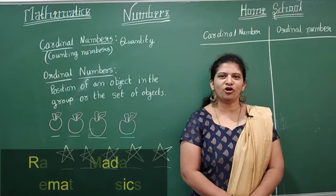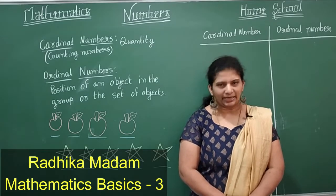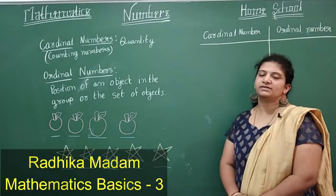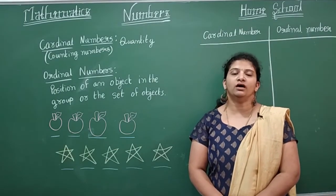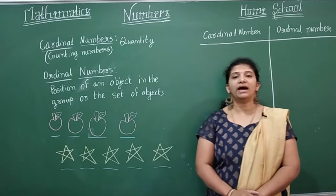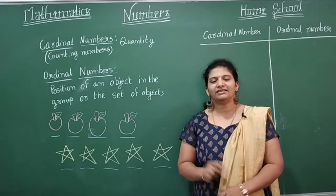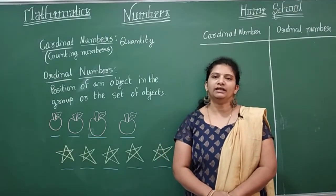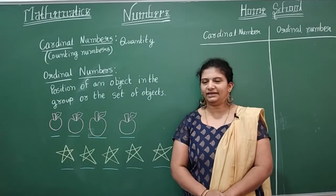Hi children, welcome to your home school. Today we are going to learn about cardinal and ordinal numbers. What is a cardinal number? Cardinal number is also called as counting numbers, or numbers which show the quantity. So when we count numbers — 1, 2, 3, 4, 5, 6, 7, 8, 9, 10 — those numbers are all called cardinal numbers. The word cardinal means showing the quantity.